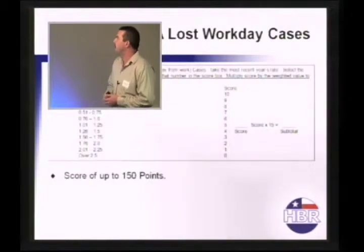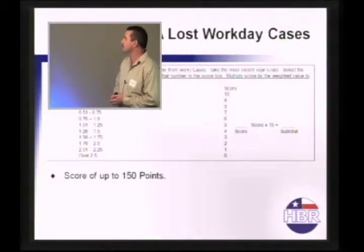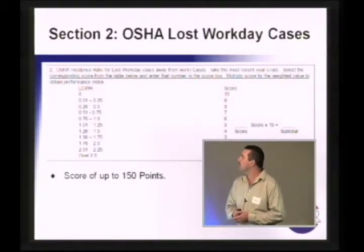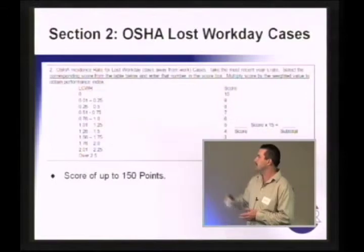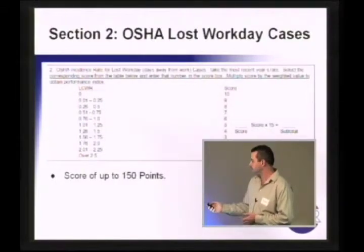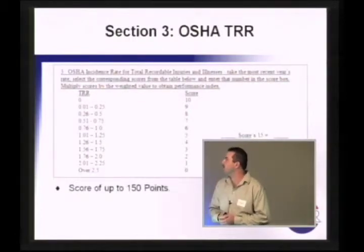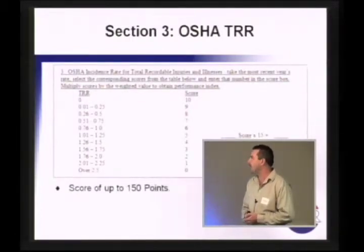Section 2 is the OSHA lost workday case. Self-explanatory. It's another scoring system. Based on your LCWR and the scoring system, times 15 possible points, 150. Section 3 is your OSHA TRR. Same thing. Depending on what your rate is, is what the score is, with possible points of 150.